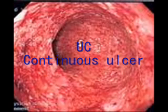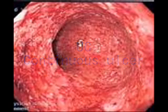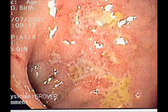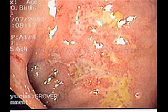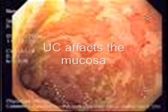We can differentiate between these based on the ulcerative pattern: in ulcerative colitis the ulcers are continuous, while in Crohn's disease the pattern appears to be serpiginous or snake-like.